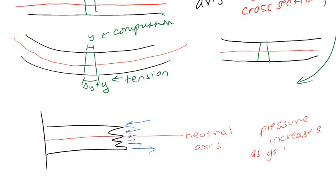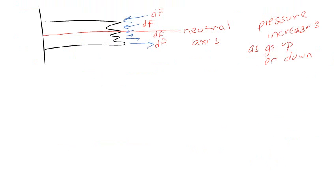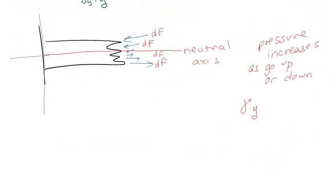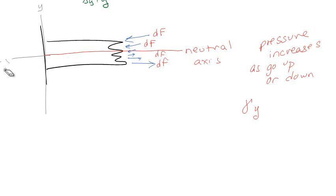The pressure increases as you go up or down from the neutral axis. So I could name some constant gamma times Y. The further up I am from the neutral axis, I've got a positive force — it doesn't really matter if it's plus or minus because it just depends on the direction of the moment. So we'll leave it generic: as I move away from the neutral axis, the pressure is going to increase. This is the pressure as we go up or down.